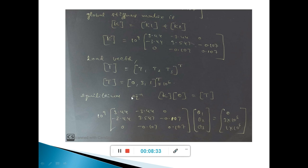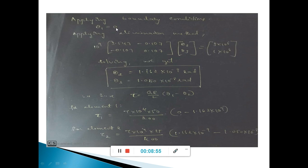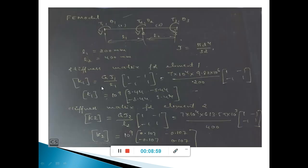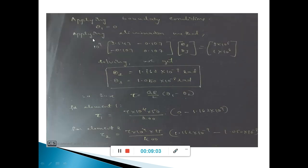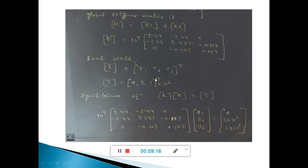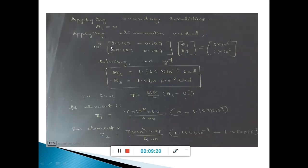Using the equilibrium equation T equals K times theta, we substitute the global stiffness matrix, with theta equals [theta-1, theta-2, theta-3]. Applying boundary conditions — from the figure, the first node is fixed, so theta-1 equals 0. Using the elimination method, we eliminate the row and column corresponding to theta-1, giving a reduced 2×2 matrix. Solving this, we obtain the values of theta-2 and theta-3.